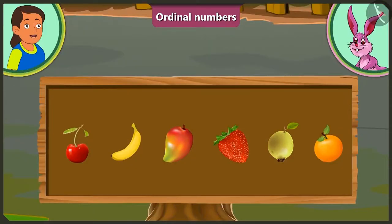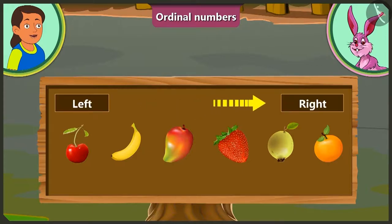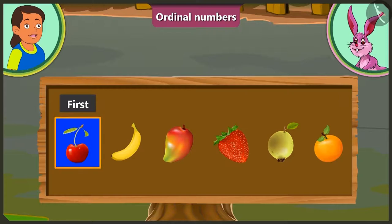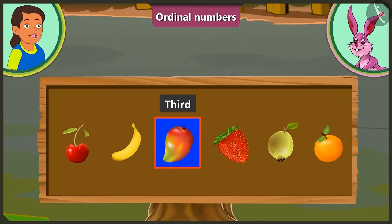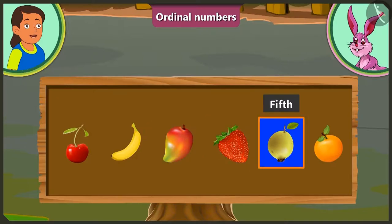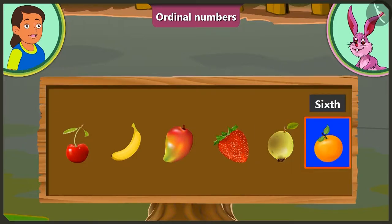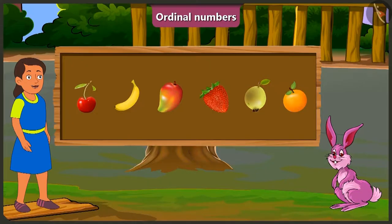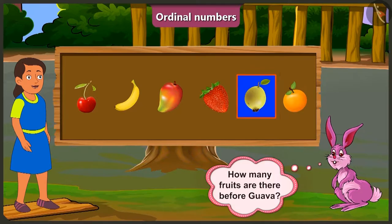This is very simple. We have to count the order of fruits from the left. At the first position is cherry, at the second position banana, at the third position mango, at the fourth position strawberry, at the fifth position guava, and finally at the sixth position is the orange. You are absolutely right! Now tell me, how many fruits are kept before guava?